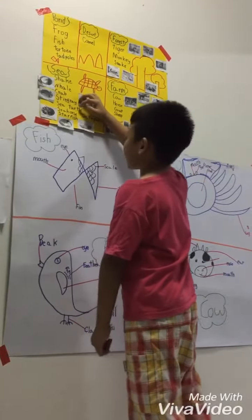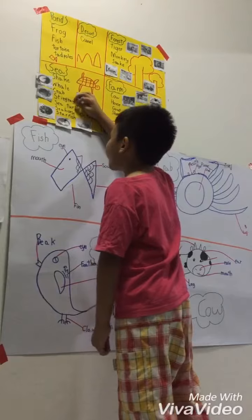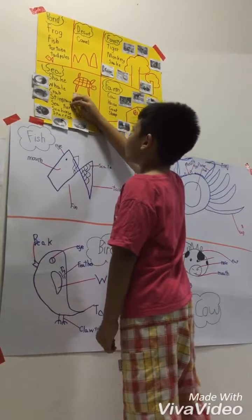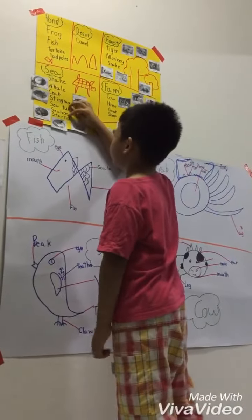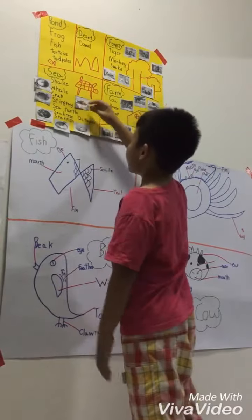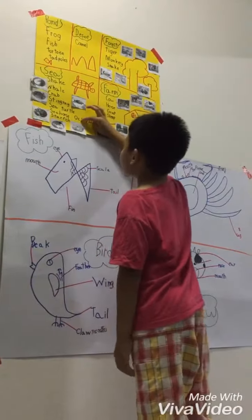Number four, stingray. Number five, sea turtle. Number six, sea horse. Number seven, octopus.